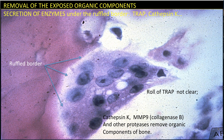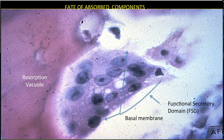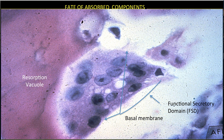Tartrate-resistant acid phosphatase is also released into the resorption vacuole. Its precise action is unknown, but it does leak out into serum, leading to its use as an indicator of excessive bone resorption, a marker in metabolic bone disorders. The released collagen and other fragments, as well as solubilized calcium and phosphate, are taken in by endocytosis from the resorption vacuole into the cell, transported to membrane-bound vesicles within the cytoplasm. The degradation products are processed within the osteoclast, ending up in the specialized region of the basal membrane called the FSD, and ultimately released into the extracellular space.